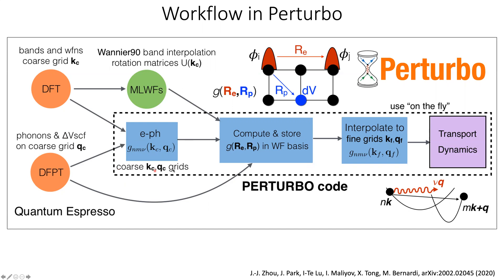Perturbo reads these two sets of information and computes the electron-phonon matrix elements g on coarse Kc and Qc grids. Then Wannier90 is used to compute the maximally localized Wannier functions, and these two are combined to compute and store the electron-phonon matrix elements in the real-space Wannier function basis. Perturbo then uses this information to interpolate and get the g's on fine Kf and Qf grids, and subsequently performs transport and dynamics analysis.